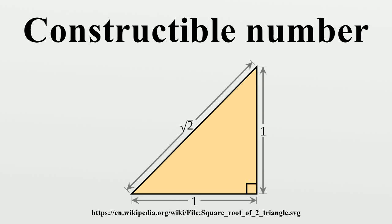A point in the Euclidean plane is a constructible point if, given a fixed coordinate system, the point can be constructed with unruled straightedge and compass.